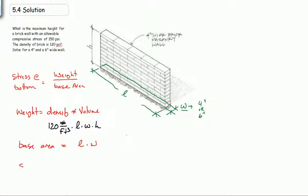So stress is equal to 120 pounds per foot cubed times L times W times H divided by L times W. And you'll see the length and width cancel out. So the stress is purely a function of height and density. And we're going to limit this. So this has to be less than or equal to 150 psi.